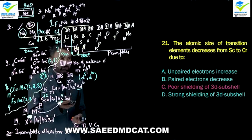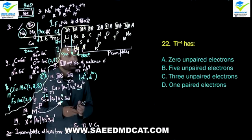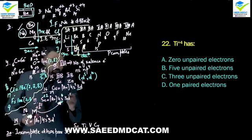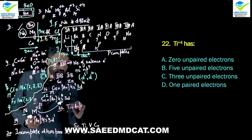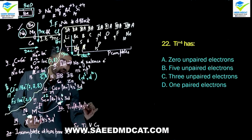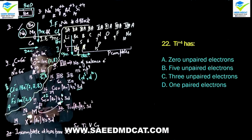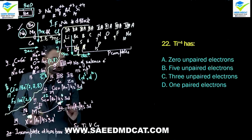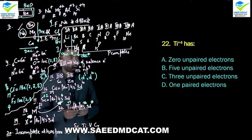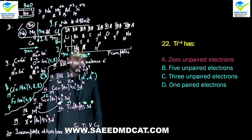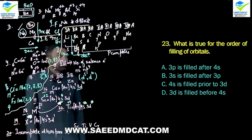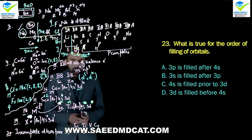Question 22: Titanium 4+ — how many unpaired electrons does it have? Titanium (atomic number 22) has configuration [Ar] 4s2 3d2. Converting to Ti4+ means removing 4 electrons: the 2 from 4s leave first, then the 2 from 3d. So titanium 4+ has no electrons remaining — zero unpaired electrons. Alpha option: zero unpaired electrons.